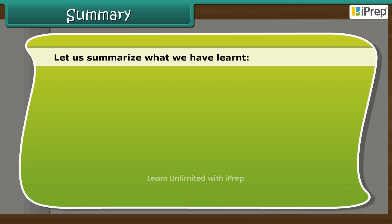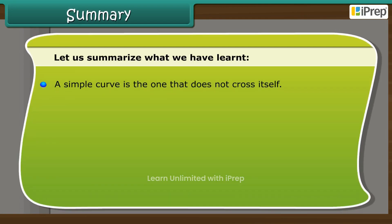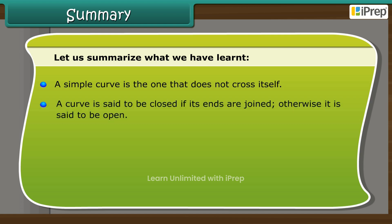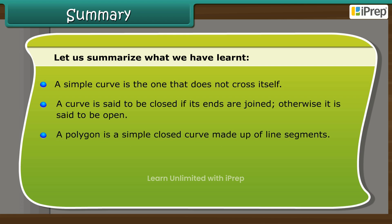Let us summarize what we have learned. A simple curve is the one that does not cross itself. A curve is said to be closed if its ends are joined; otherwise it is said to be open.